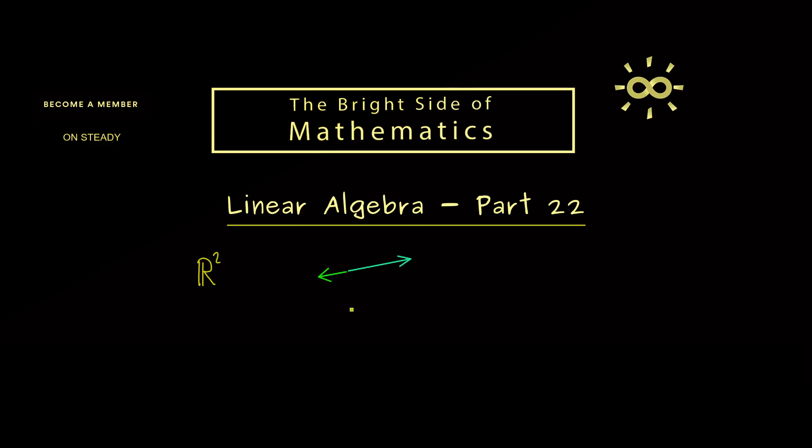There we call two vectors collinear if they lie on the same line. In other words, the vector u is just a scaled version of the vector v. So we find a scalar λ in ℝ such that λ times v is u. So you see, this is indeed a simple concept, and there u and v would be called collinear.